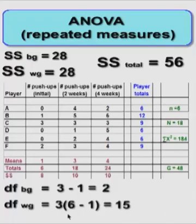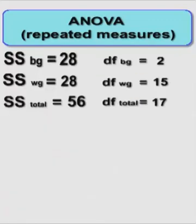Within groups, you take the number of different groups, which is three, times the number of individuals in a single group minus one. That gives us 15. And to find the total degrees of freedom, we just add them all together. So now we know all the degrees of freedom and the sum of squares from the regular ANOVA.